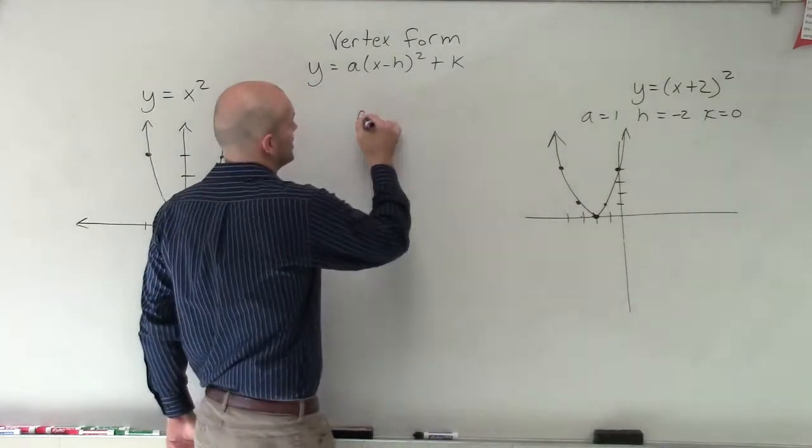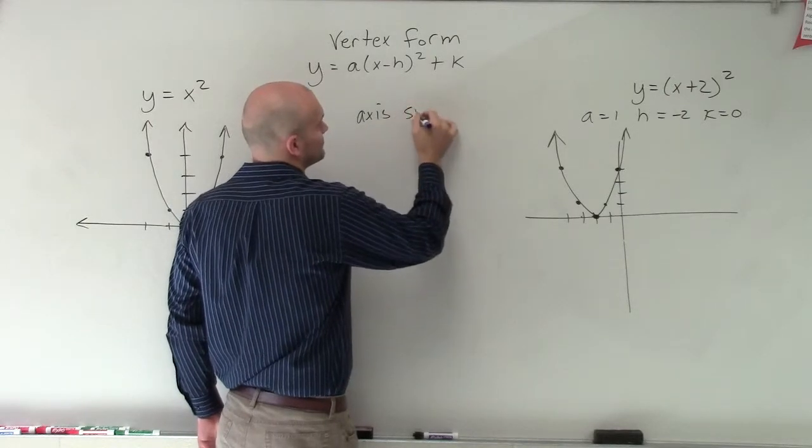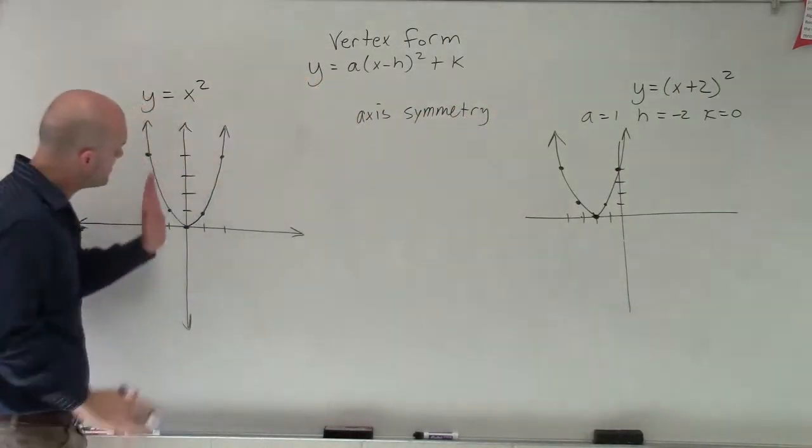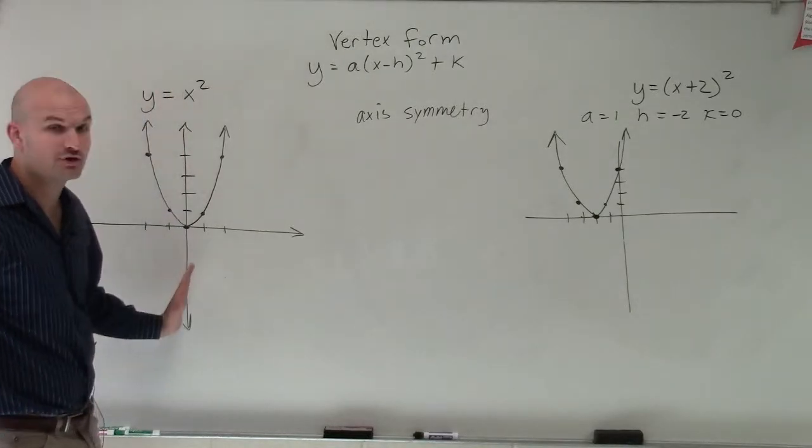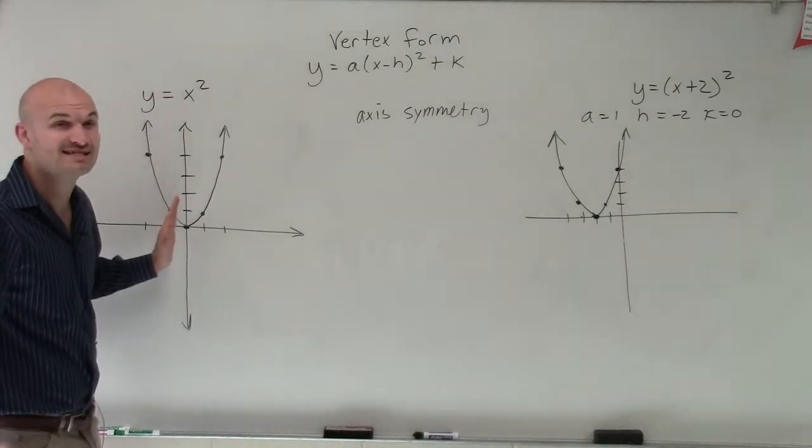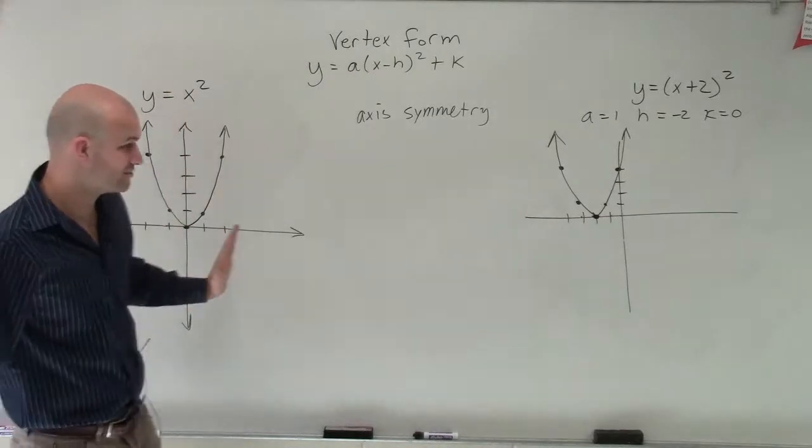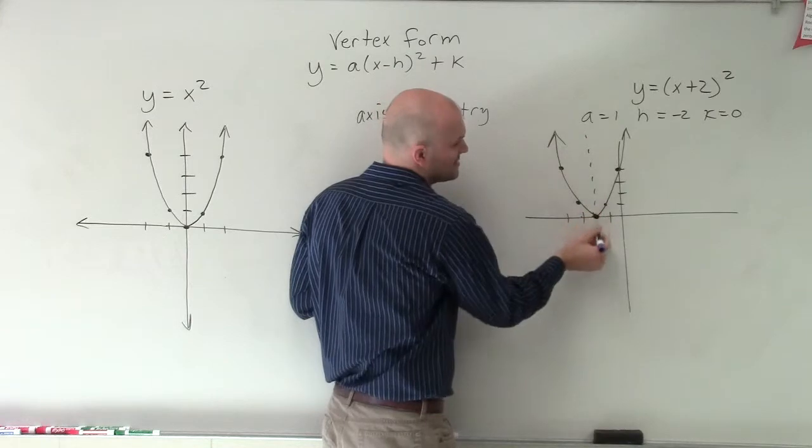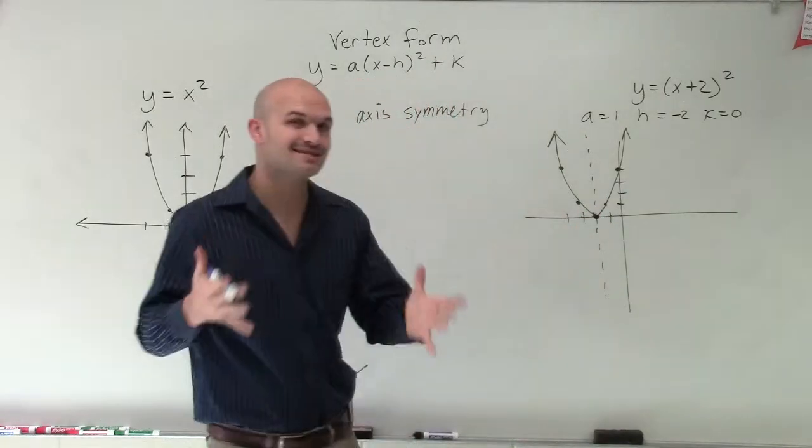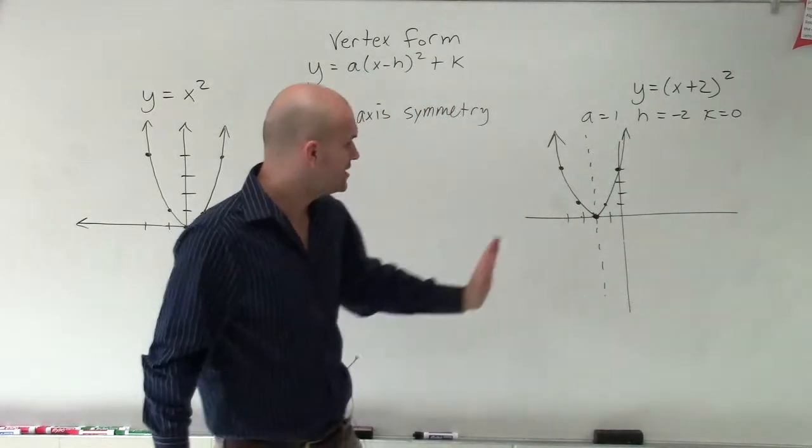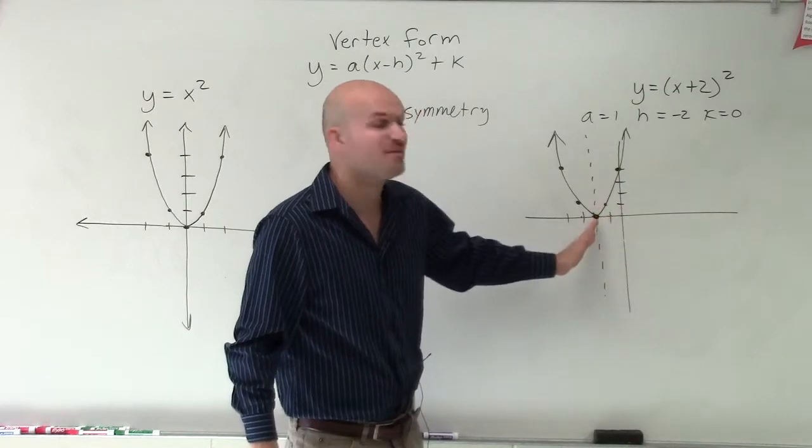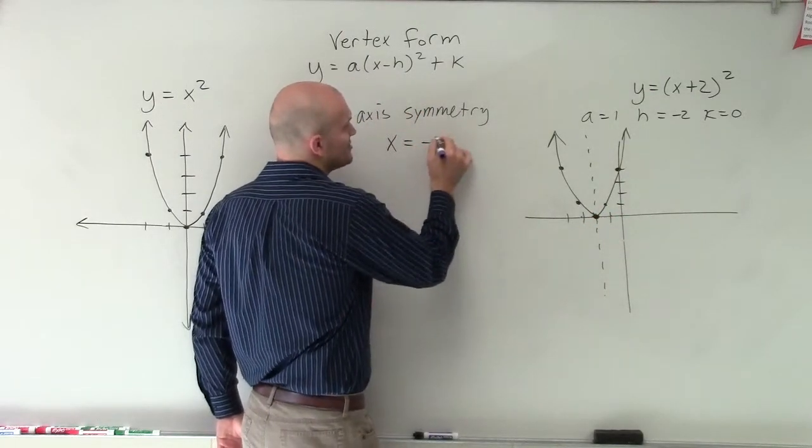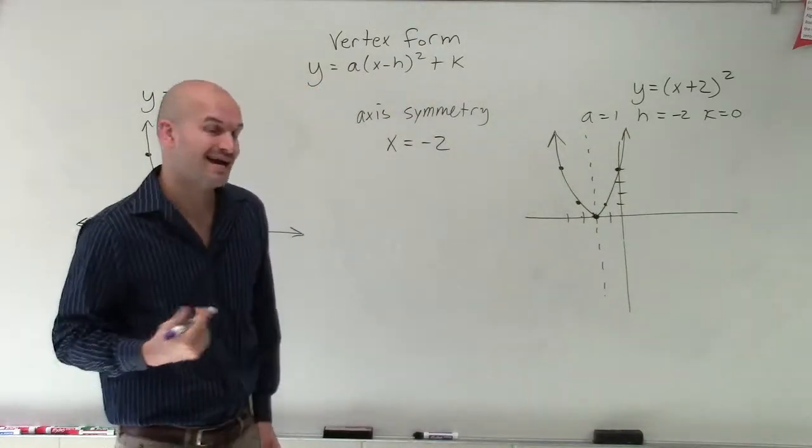Now let's take a look at a couple different things. Let's first look at the axis of symmetry. Now, the axis of symmetry here is, remember, the line that's going to go directly through your graph. And we knew that that point was at x equals 0. Well, now you can see that my graph has shifted, and therefore my axis of symmetry is also shifted. And remember, the axis of symmetry goes through your vertex. So I can see my vertex, the x value of my vertex is at x equals negative 2. So therefore, my axis of symmetry is going to be the vertical line x equals negative 2.